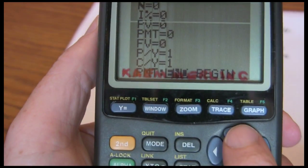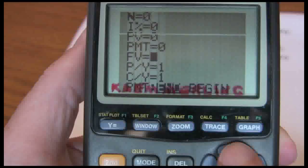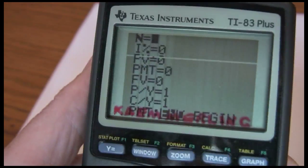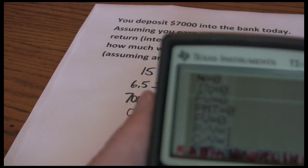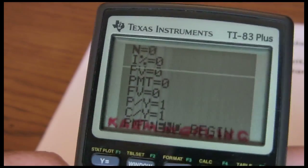Use the up arrow to go back up. And notice that automatically changed both the periods per year and the compounding periods per year. Now we just want to plug in our values from this problem right into our financial calculator. And you can see the first value that we had was 15 for our N.